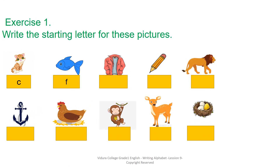Exercise 1: Write the starting letter for these pictures. Picture number 1 - it's a cat. What is the starting letter? The starting letter is C. You can write the simple C in the box. Second picture - Fish. Starting letter F. Simple F in the box. Third picture - Jacket. Starting letter J. Simple J. For all the pictures, you are going to write the starting letter in the box. Well done.